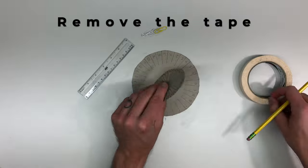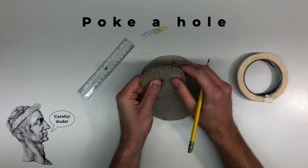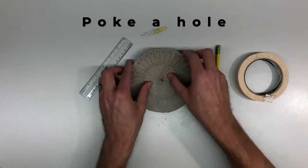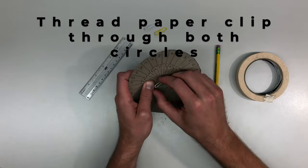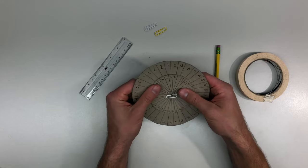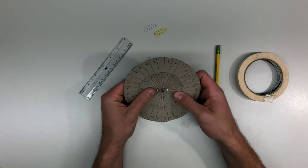Now remove the tape and carefully poke a hole through both circles. Make sure that your fingers aren't behind where you are poking. Then thread a paper clip through both circles. Now we are ready to encrypt some secret messages to send to our friends.